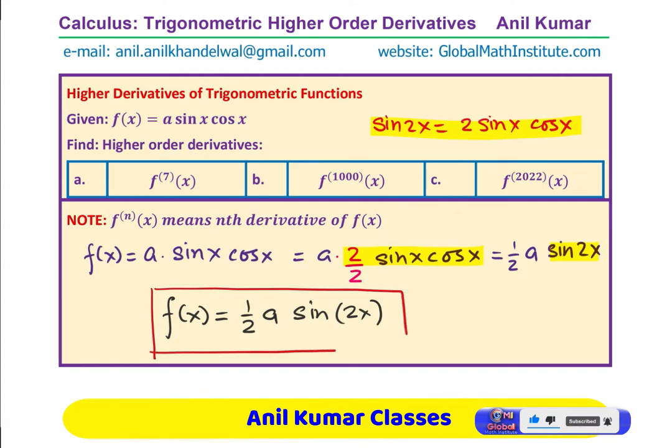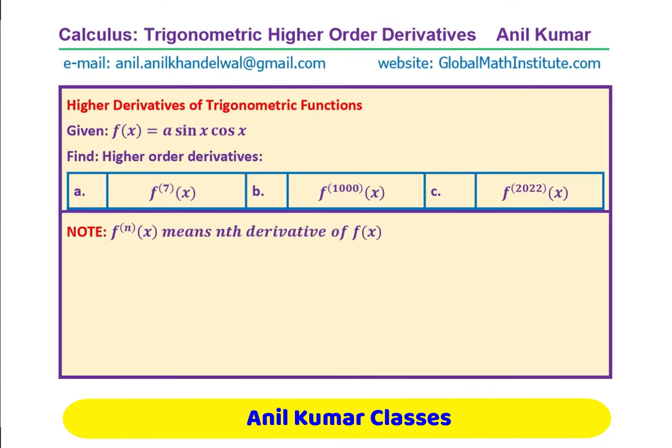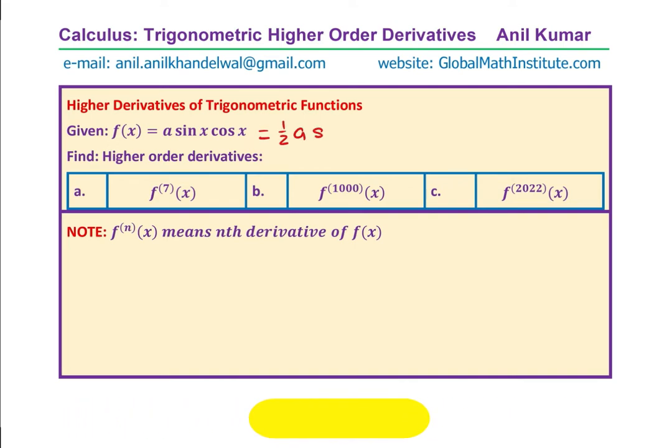Let us do the derivatives. We could rewrite this function as half of A sin 2x and we are going to write their derivatives one by one. The first derivative is what? Half of A is a constant, sin 2x derivative is cos 2x times 2 and that can be simplified and written as, 2 and 2 cancels, we have A cos 2x. I just cancelled this 2 with this.